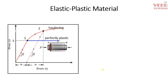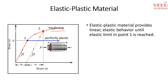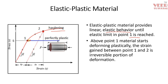Material nonlinearity is defined by the elastoplastic model. In the stress-strain curve, there is a point after which strain hardening begins. Up to point one, there is elastic behavior; after point one, material plasticity begins. To find the hardening point where plasticity starts, we offset it and draw a parallel line, identifying the elastic zone and plastic zone.